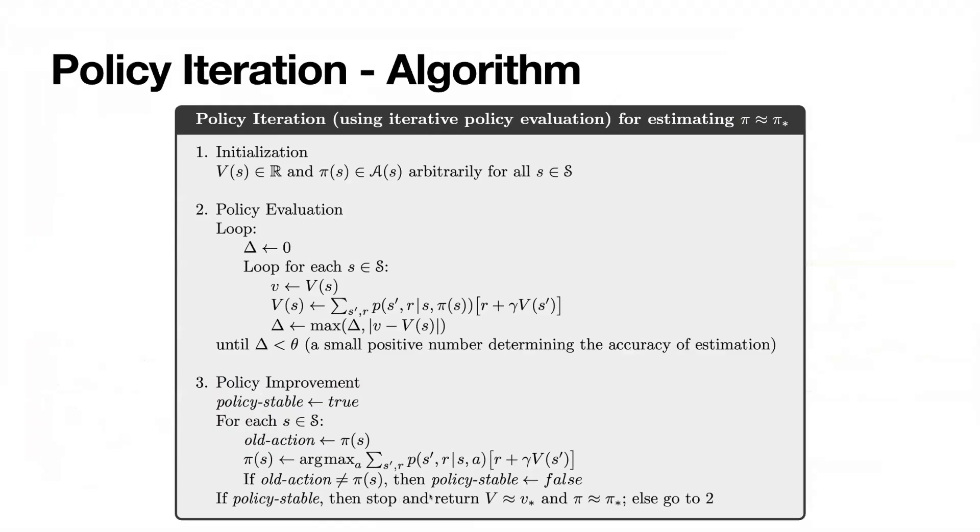But if the policy is not stable, the new way of action is different from previous. We conclude that the policy is not stable and we go again to step two. So step two and three are repeated until the stable policy is achieved.